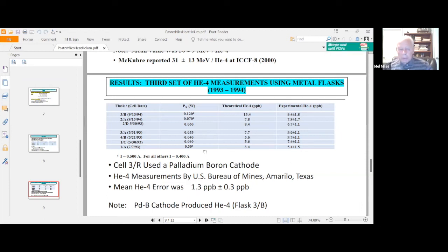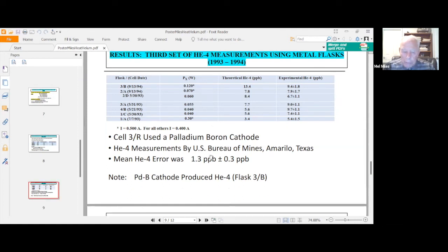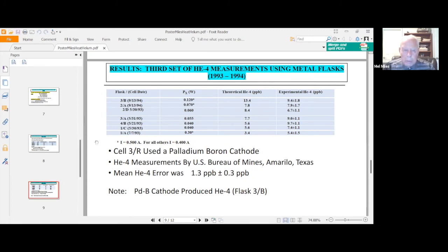They were in between what Bush measured, 5 parts per billion, and what Brian Oliver was able to do, the best person in the world for helium-4, and he got it down to 0.1 parts per billion for helium-4. We also included in this study, the first study was with a palladium boron cathode, not pure palladium cathode, but we also got helium-4 with a palladium boron cathode, and close to the right amount.